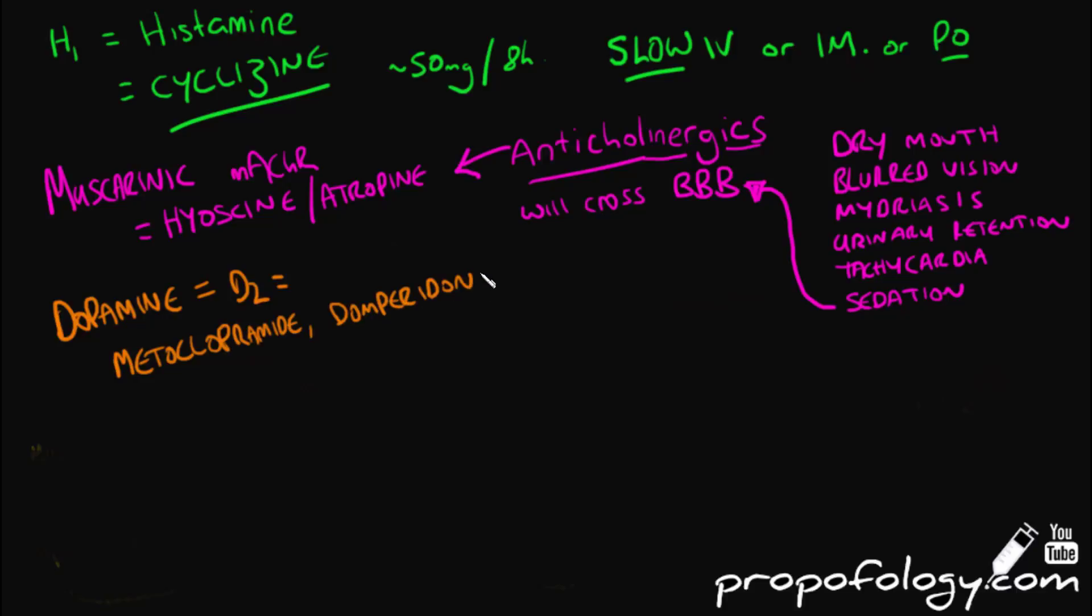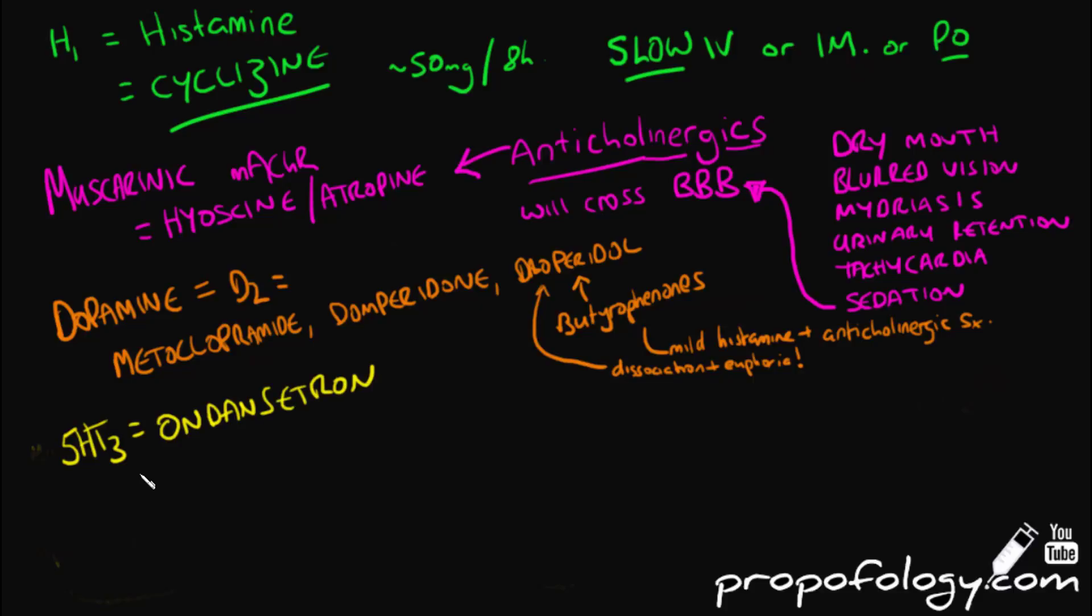For the dopaminergic system, drugs acting on D2 are metoclopramide, domperidone, and droperidol. Droperidol is a butyrophenone, which is in the same family as haloperidol, and is definitely not used solely as an antiemetic. Droperidol will also show mild action at the histamine receptor and have anticholinergic side effects too. Interestingly, you can also get dissociation and euphoria with droperidol.